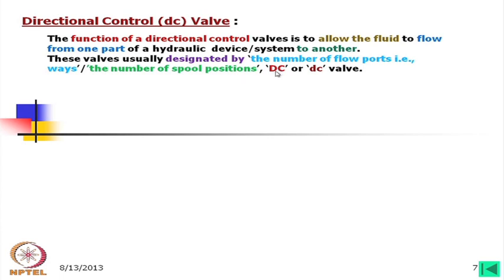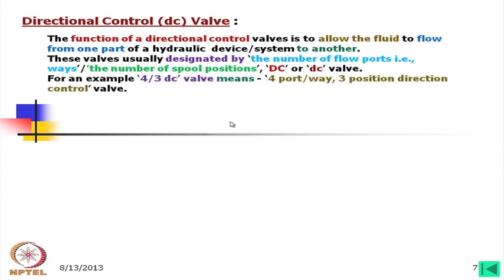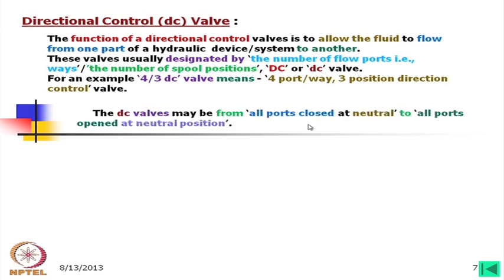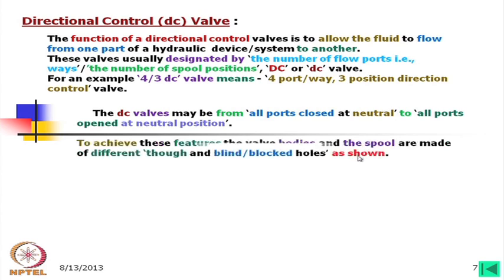Directional control valves are simply called DC valves. For example, a 4 by 3 DC valve means a 4-port, 3-position directional control valve. The DC valve may range from all ports closed at neutral to all ports open at neutral position. Some valves have no neutral position — it is simply either one direction or the opposite direction.